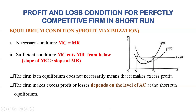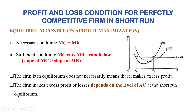We are going to talk about the short run profit and loss conditions. In the short run, a firm can have excess profit or excess loss. In the long run, perfect competition reaches a specific equilibrium. The cases we will cover are: excess profit, excess loss, normal profit, and the shutdown point.